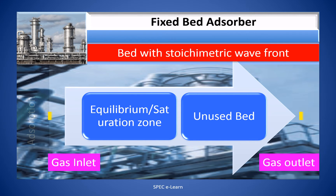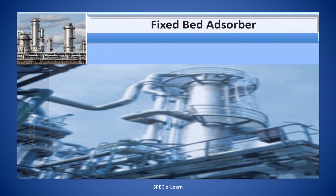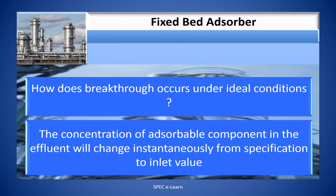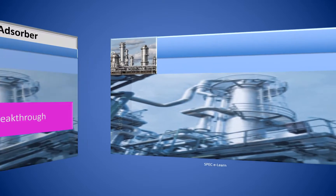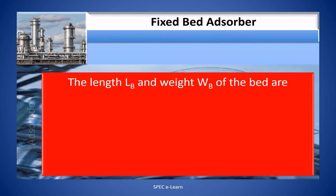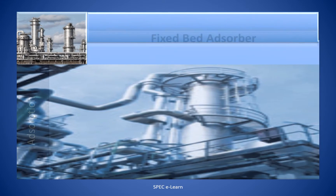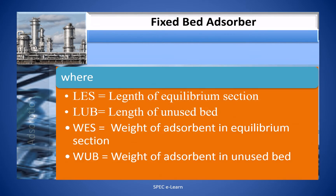A bed with a stoichiometric wave front has an equilibrium zone and unused bed. Under ideal conditions, the concentration of the adsorbable component in the effluent will change instantaneously from specification to the inlet value. It is called stoichiometric breakthrough. The length of the bed LB and weight of the bed WB are given by: LB = LES + LUB and WB = WES + WUB, where LES is the length of the equilibrium section, LUB is the length of the unused bed, WES is the weight of adsorbent in the equilibrium section, and WUB is the weight of adsorbent in the unused bed.